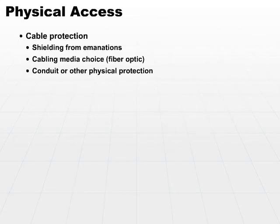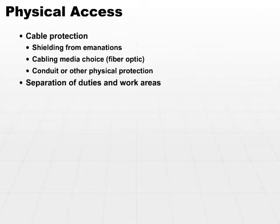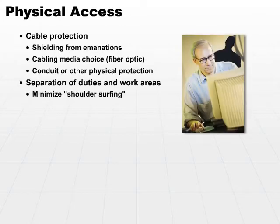Another type of physical access control is separation of duties and work areas. Separation of work areas can help minimize shoulder surfing. Shoulder surfing is where you have two people working on perhaps different tasks — if one person can see the other person's monitor, you can easily monitor what that person is doing and even watch what they're typing. Shoulder surfing is looking over the shoulder and visually watching what the other person is doing.